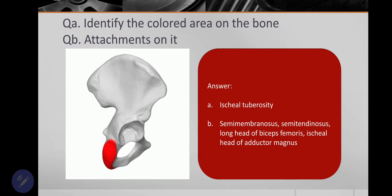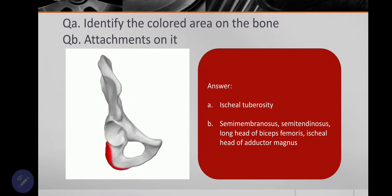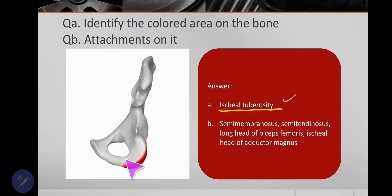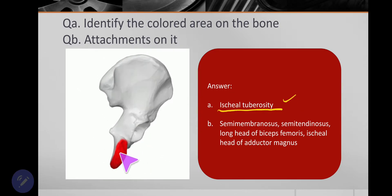Okay, so got it. This marked area is ischial tuberosity, the colored area. So ischial tuberosity is the part of this bone, ischium bone, posterior inferiorly.